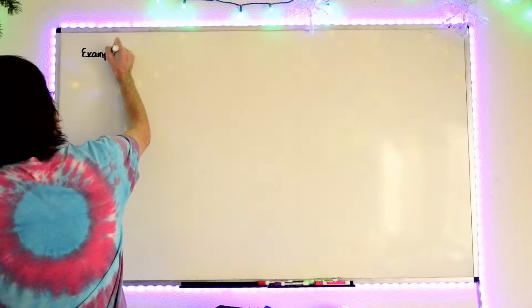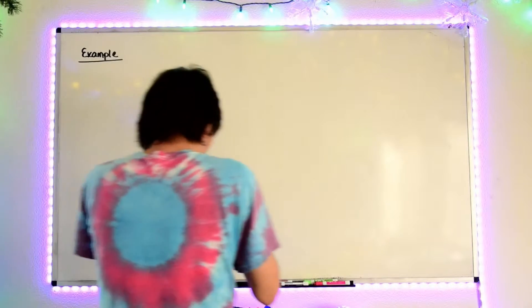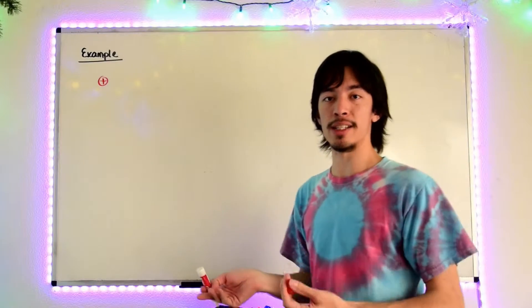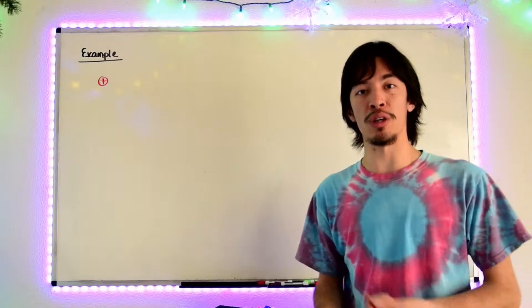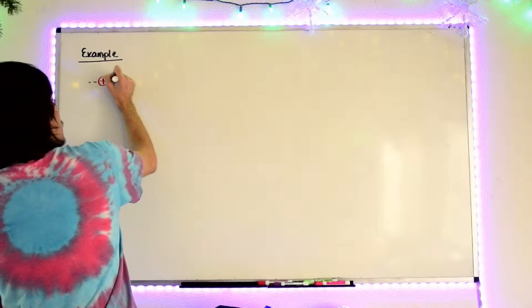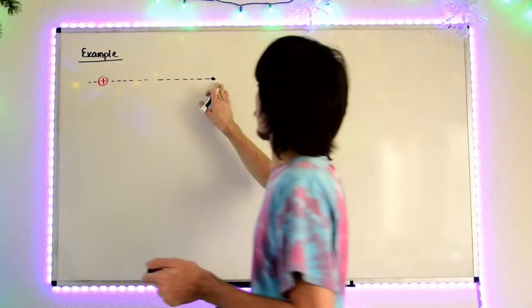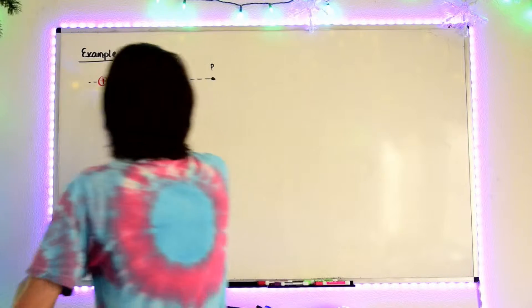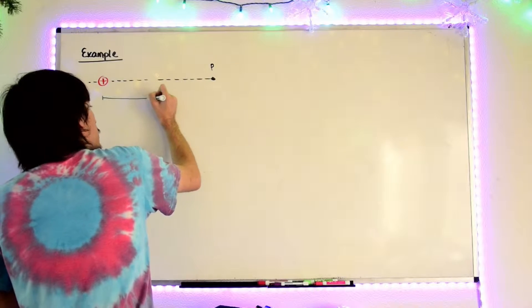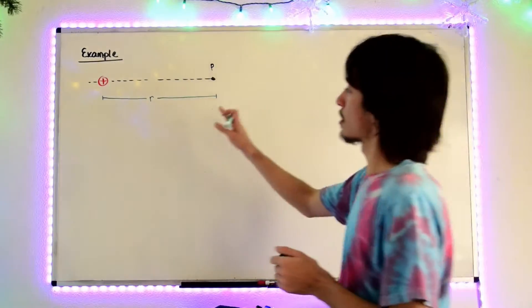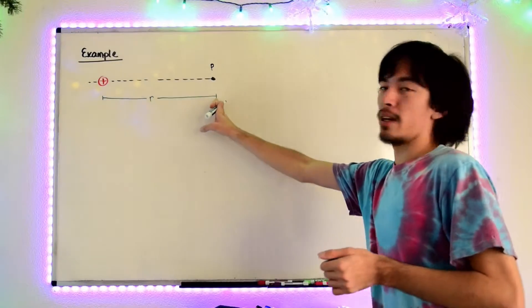We have our proton in this case. Since it's a proton, we should know the charge of it even though it's not directly stated, because the charge of a proton is the elementary or electron charge. We'll use that some distance away from it at some empty point in space — there's nothing at this point here. Let's call that point P. There is some distance R from that positive charge out to that point of interest. R is always the distance from the charge to the point of interest.